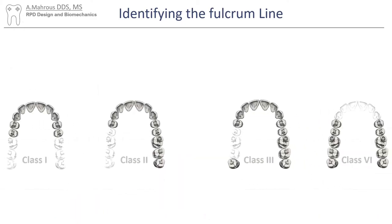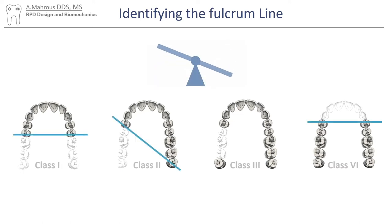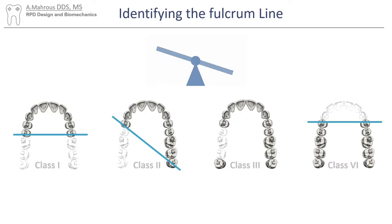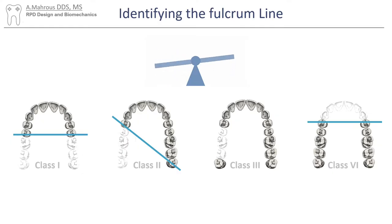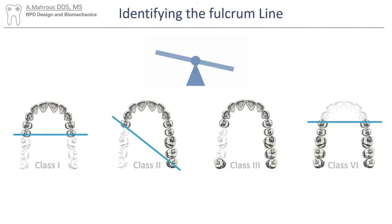So, as a first step, let's identify the fulcrum lines on the four basic Kennedy classifications of partial dentures. As you can see here, the line goes through the distal-most abutment teeth on Class 1 and 2 cases, and through the anterior-most abutments on the long span Class 4 case. There are no fulcrum lines on Class 3 cases, as those do not have distal extensions or free end saddles to cause RPD rotation.